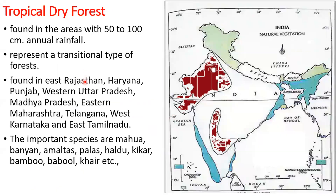Tropical dry forests are found in areas with 50 to 100 centimeters of annual rainfall. They represent a transitional type of forest — a transition between the moist forest and the desert. They are found in East Rajasthan, Haryana, Punjab, Western Uttar Pradesh, Madhya Pradesh, Eastern Maharashtra, Telangana, West Karnataka, and East Tamil Nadu. The important species are mahua, banyan, amaltas, palas, haldu, kikar, bamboo, babul, and dhak.